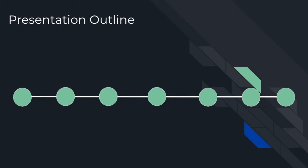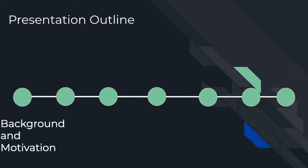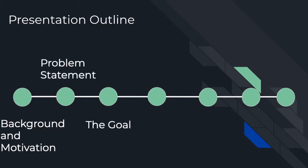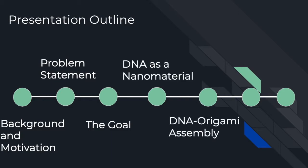We will begin the presentation by providing the background and motivation for our engineering problem, following which we will define the problem that we are addressing, the proposed solution, and its goal. We will then discuss in more detail the material used and the manufacturing technique employed to generate the solution. Finally, we will discuss the limitations and the next steps for our proposed solution.